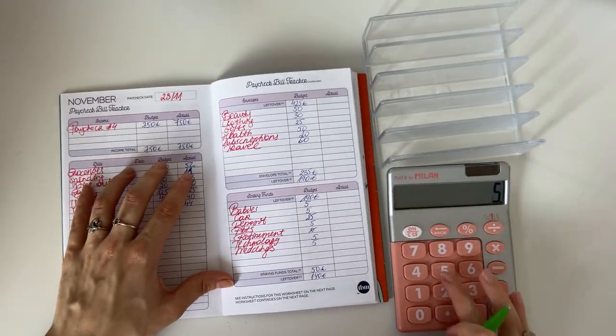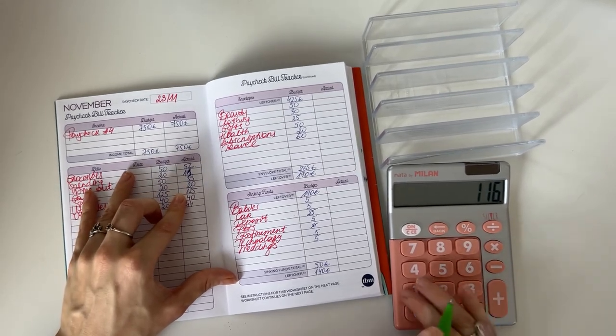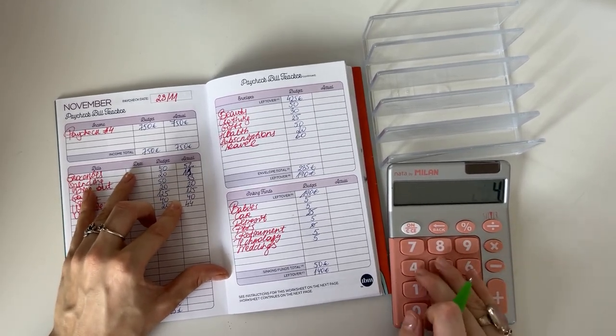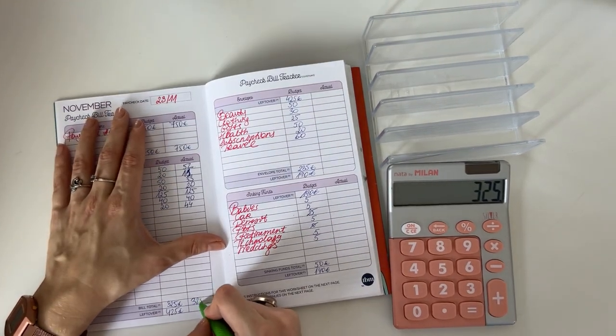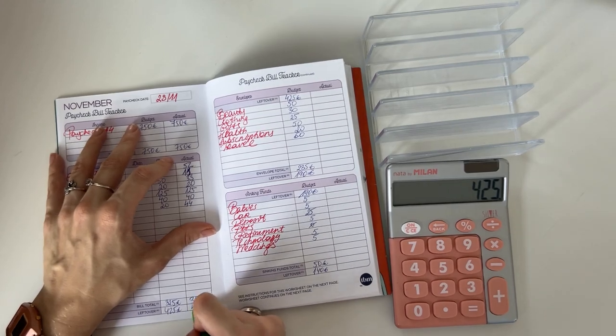Now let's calculate it together. 52 plus 11, the actual amounts for this week is 325. So 750 minus 325 is 425.